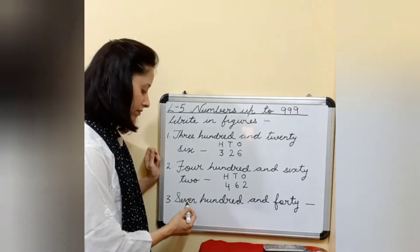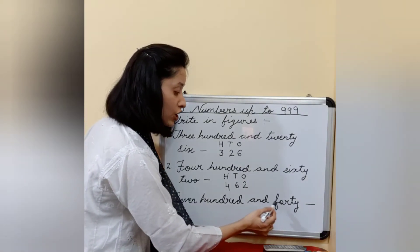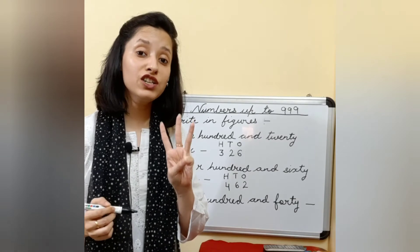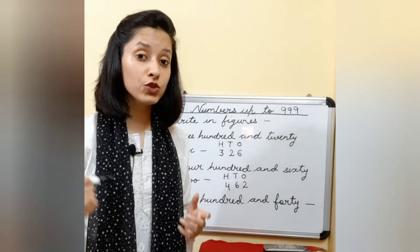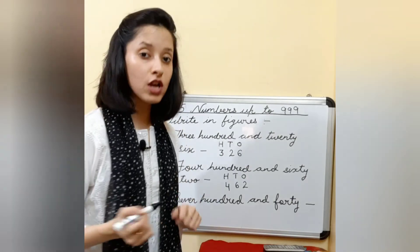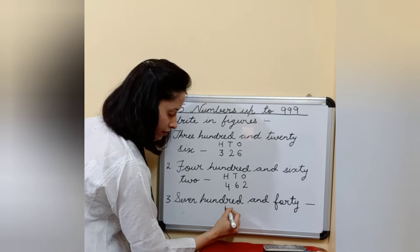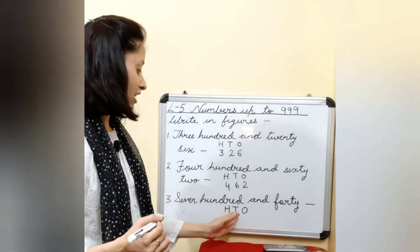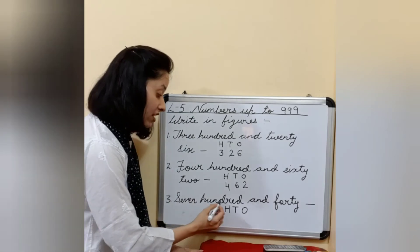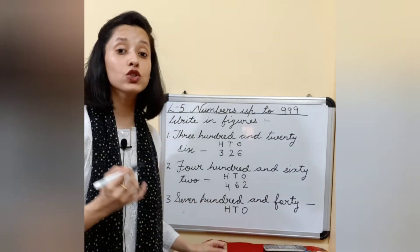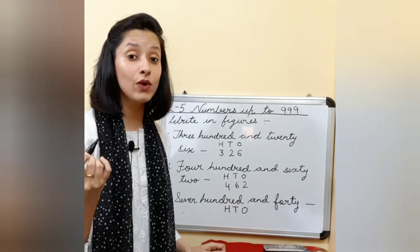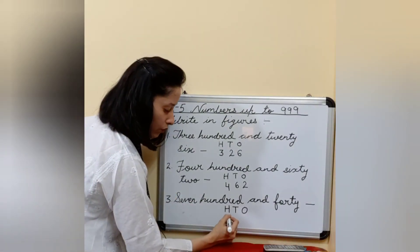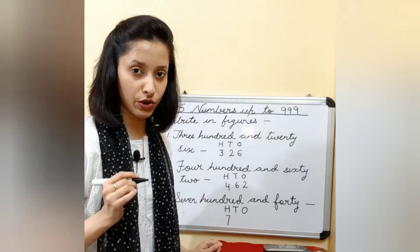Now see the next example, children: seven hundred and forty. By seven hundred, you understand again it is a three-digit number. So the first thing that comes to your mind is that you have to write H, T, O. When seven hundred is given, you only have to write seven at hundreds place — that is below H, you will write seven.